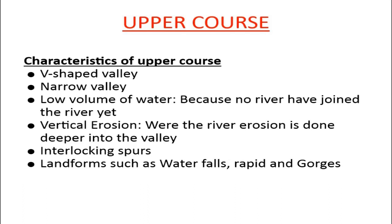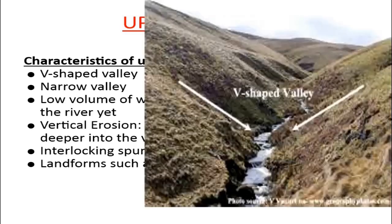Moving on, we have the characteristics of the upper course. In the upper course, we say that the upper course has a V-shaped valley. With a V-shaped valley, you are likely to see it when you stand downstream and look upstream — it has this V-shape to it, and that is what we refer to as a V-shaped valley.